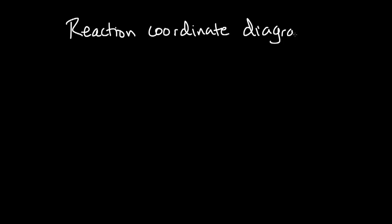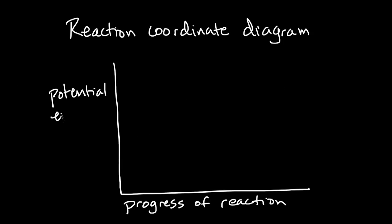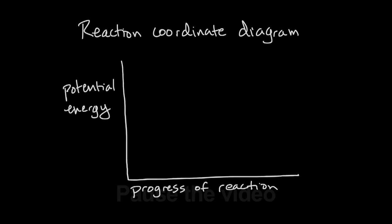Draw your own reaction coordinate diagram and label the forward and reverse reaction paths. Suggest what the relationship might be between the activation energy and the relative rates of the forward and reverse reactions. Pause the video.